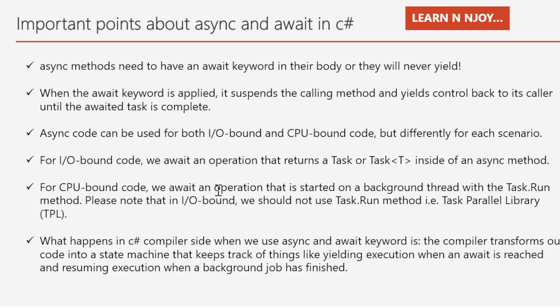You might be thinking about what happens on the C# compiler side when we use async and await. The compiler transforms our code into a state machine that keeps track of things like yielding execution when an await is reached, and resuming execution when a background job has finished. This removes the burden from your head — the compiler performs it on your behalf. You just use async and await and the compiler will take care of it.